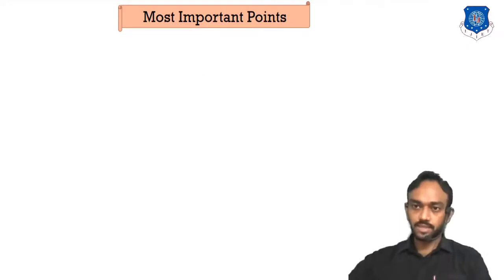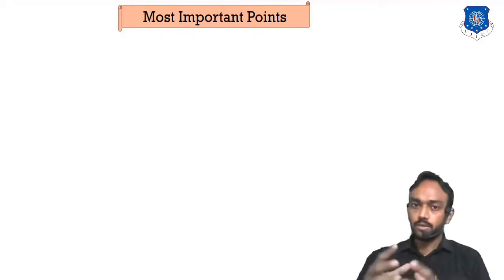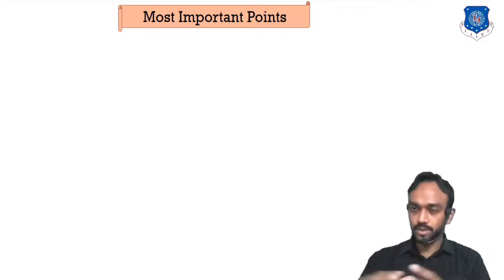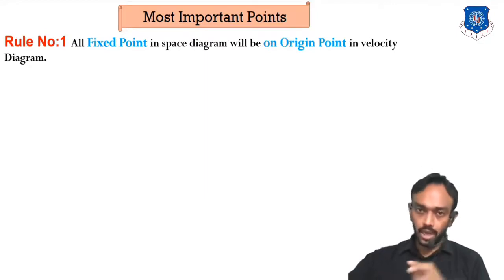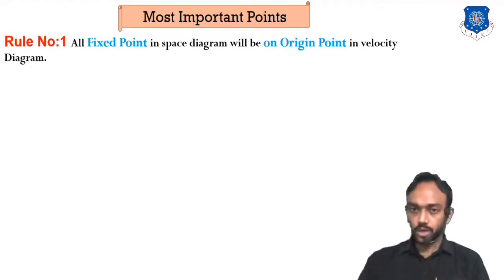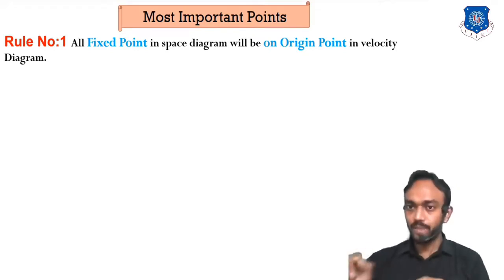Before starting the examples on velocity in mechanisms, we will revise some points learned in a previous lecture, because in this chapter there is no derivation or any formula — it is totally example-based on the fundamental things we have learned. The first rule is that all fixed points will be at the origin, so in a mechanism whatever points are fixed will be at the same origin point in the velocity diagram.